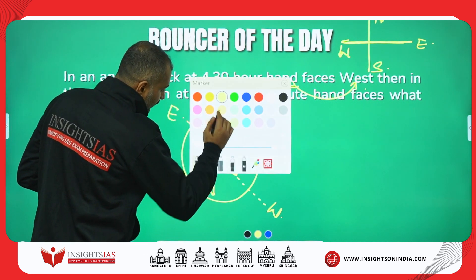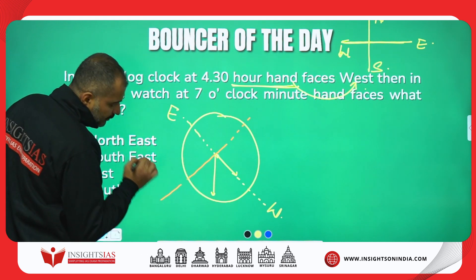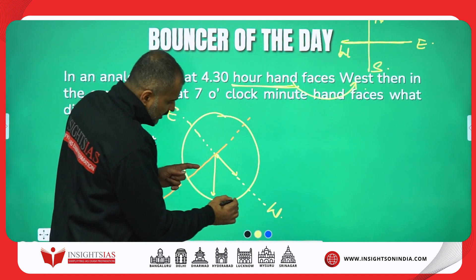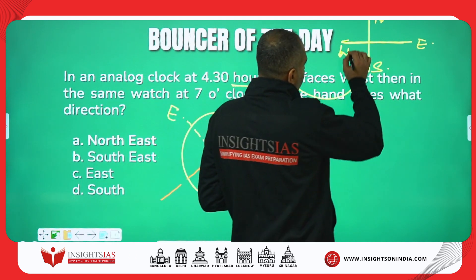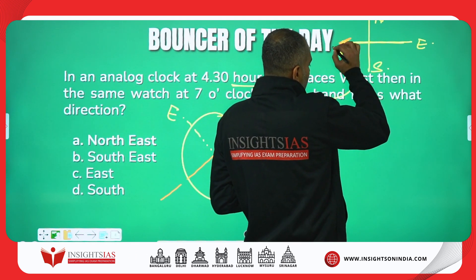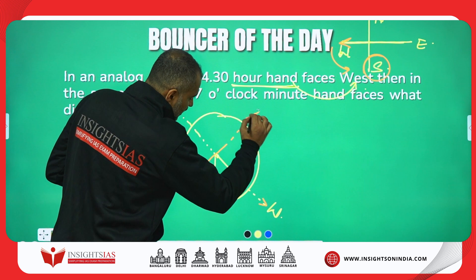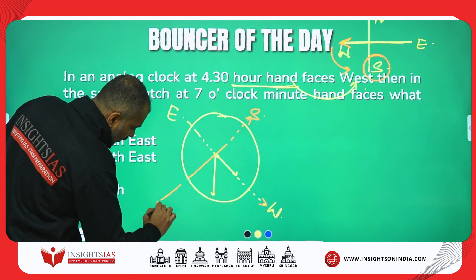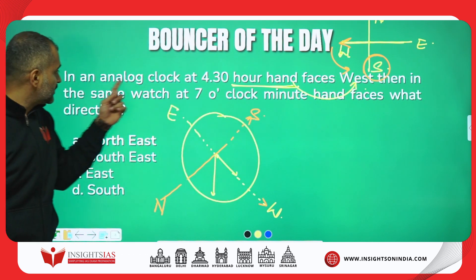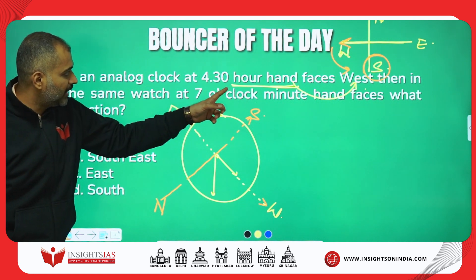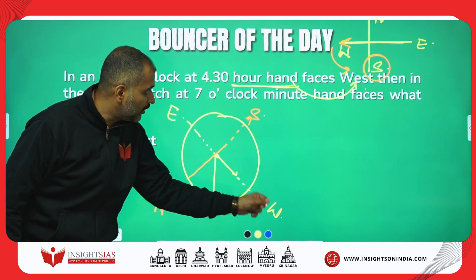Similarly, if I draw a perpendicular to the east-west line — this is west. What becomes left of west? Left of west will be south. So this is the south and this is the north. These are the new references according to the given statement: at 4:30, the hand faces west. This is the new reference.